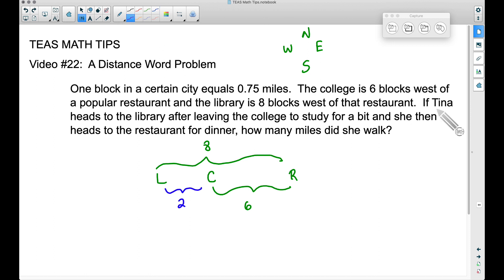Now, what do we know about Tina? So Tina heads to the library after leaving the college. So she's heading to the library after leaving the college. That's two blocks. She studies for a bit and she then heads to the restaurant for dinner. So she's going to leave the library, go to the restaurant for dinner. That's another eight blocks, which gives us a total of 10 blocks that she walked. Now go back and look at that again. She left the college, went to the library. We said that was two blocks. She leaves the library, heads to the restaurant for dinner. That's an additional eight blocks for a total of 10 blocks.